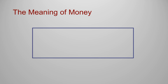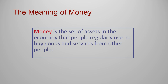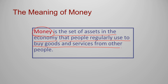First, we'll discuss the meaning of money. Money is the set of assets in the economy that people regularly use to buy goods and services from other people. You have money all around you — you use it in the form of cash and in different forms. It's important to understand that money includes all assets in the economy that consumers, businesses, and governments regularly use to buy goods and services.